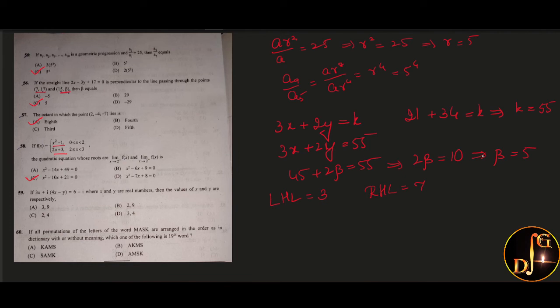Next question, if 3x plus i times 4x minus y is equal to 6 minus i, then the value of x and y. So obviously, 3x is equal to 6, which implies x is equal to 2. And from the imaginary part, 4x minus y is equal to minus 1. Substituting x is equal to 2, we get 8 minus y is equal to minus 1, which implies y is equal to 9. So the answer is option B.